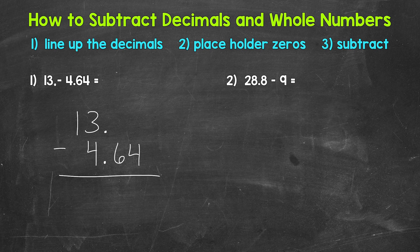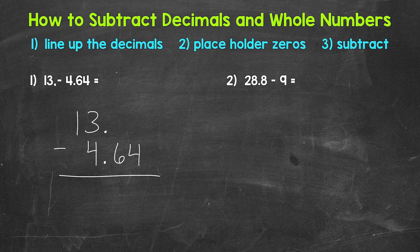Now we have 13 with a decimal point minus 4 and 64 hundredths. Do not just bring the 6 and the 4 straight down into the answer — there are actually zeros above those digits, so we need to go through the subtraction process. The decimals are lined up but it looks a little offset, so we can use placeholder zeros. Since 4 and 64 hundredths goes to the hundredths place, we need two zeros here so that 13 goes to the hundredths place as well. Those zeros to the right of the decimal point are not changing the value of 13 — that's still 13. Now we're ready to subtract.